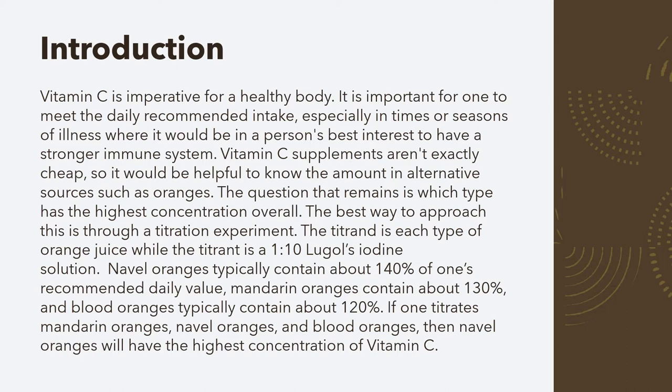Typically, navel oranges contain about 140% of your daily recommended value, mandarins containing about 130%, and blood oranges typically contain about 120%. Based off of this information, I hypothesize that if I titrate navel, blood, and mandarin oranges, then the navel oranges will have the highest concentration.